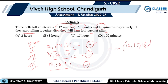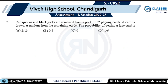Since he asks when they will next toll together, I take the lowest common multiple, which turns out to be 90, which is nothing but 1.5 hours.